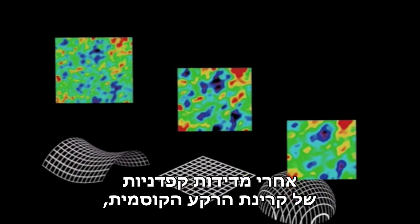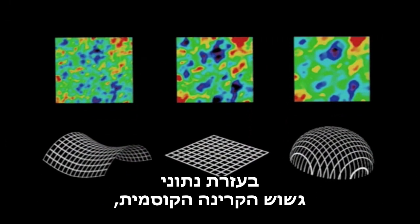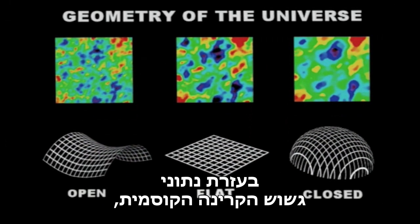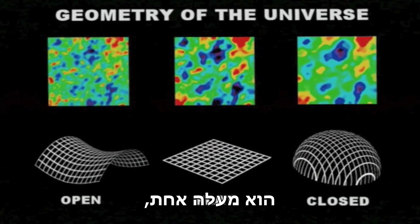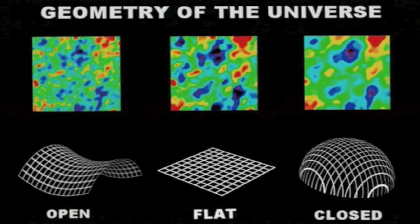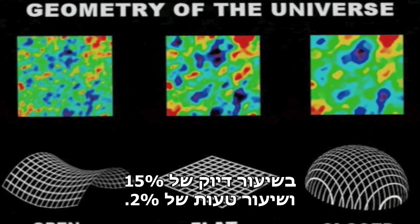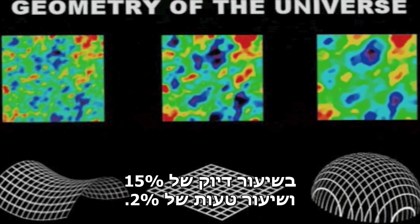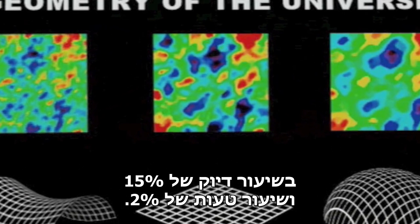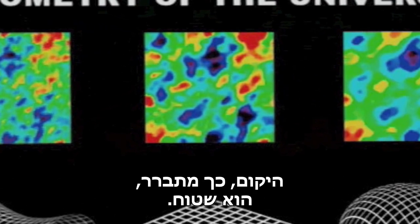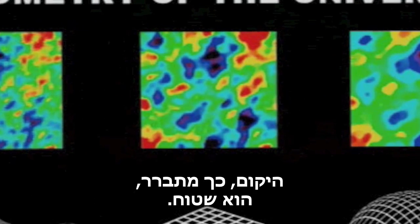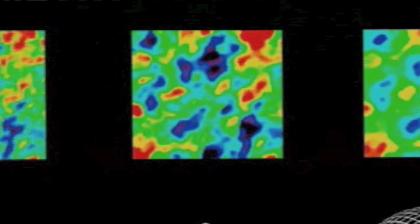After careful measurements of the cosmic microwave background using WMAP data, the average distance between fluctuations was found to be 1 degree, with an accuracy of 15% and an error of 2%. The universe, it appears, is flat.